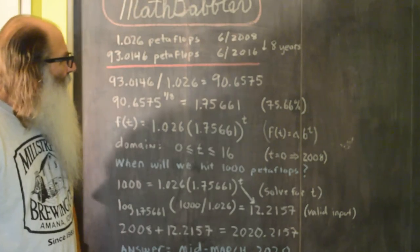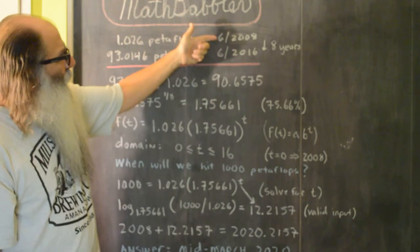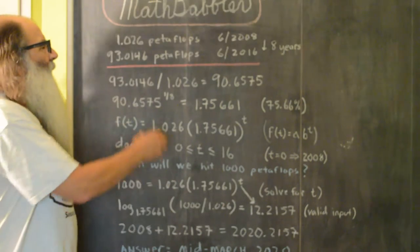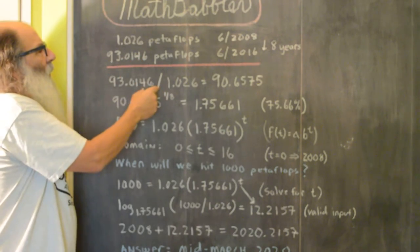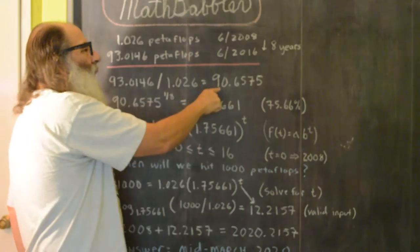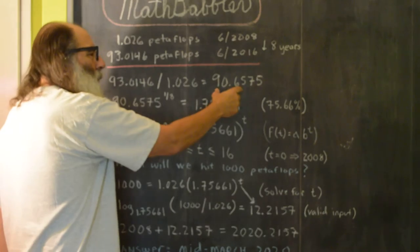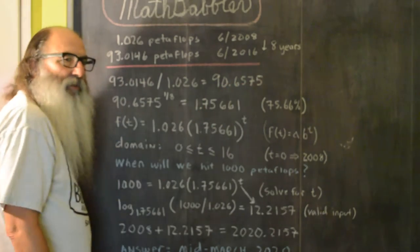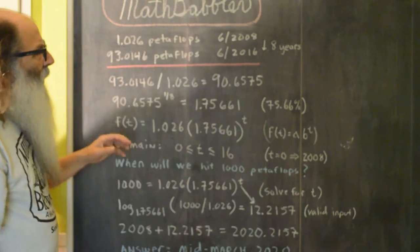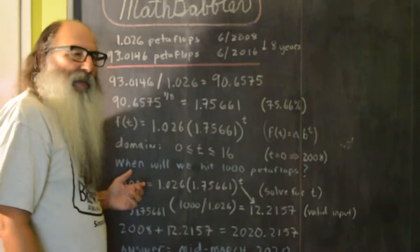First thing we do is we calculate the growth from June 2008 to June 2016. That's taking the ratio of the current benchmark and dividing it by the initial benchmark. That gives us this number here. Now, we want to basically annualize this, so we're going to take that number and raise it to the 1 eighth power because this is the growth that was experienced over the span of eight years.